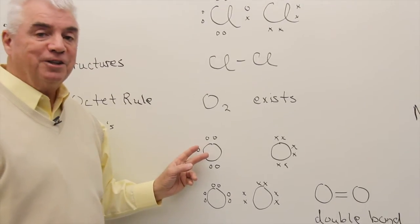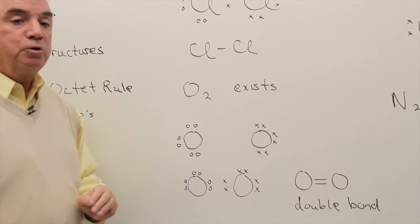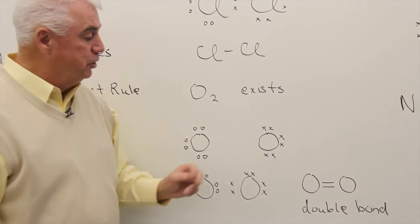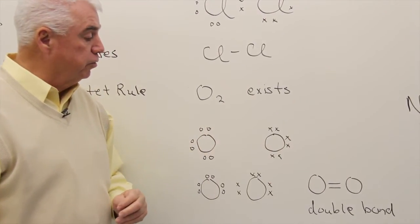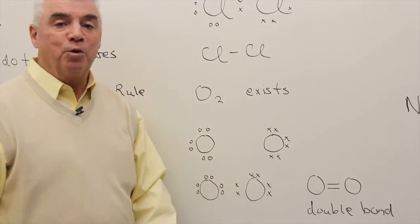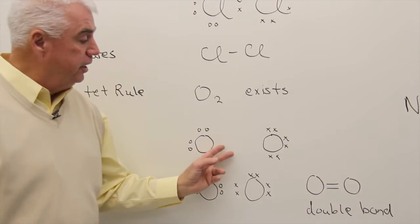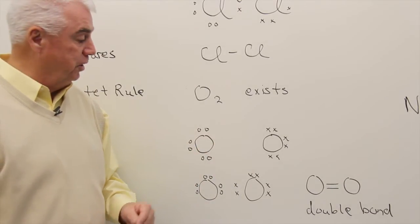Well, oxygen is in group 6a, six outermost electrons. Here's another oxygen. It too has six outermost electrons. And I've started with the worst case scenario. We know they're going to share electrons. And yet we haven't placed any between these two oxygens.